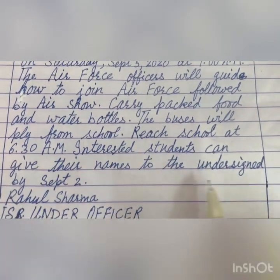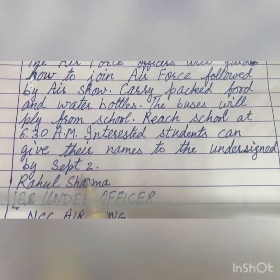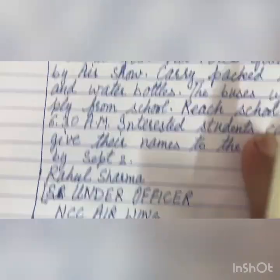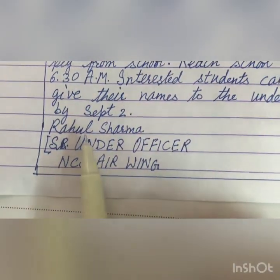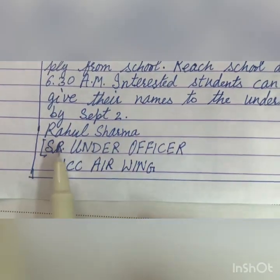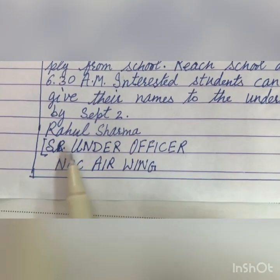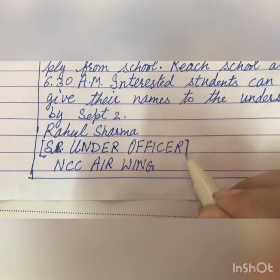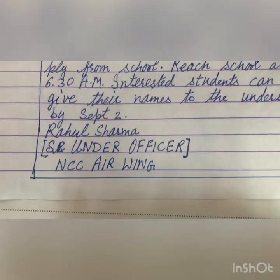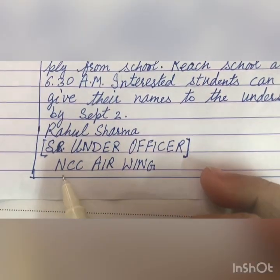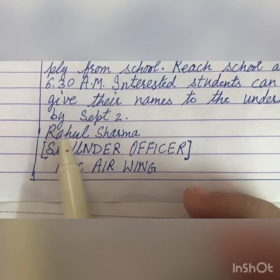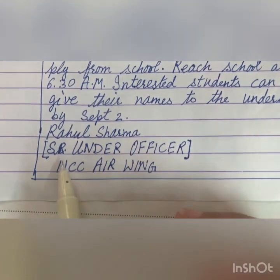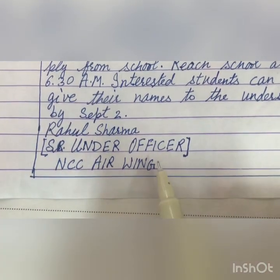Participation is not mandatory. Interested students can give their names to the undersigned by September 2. The notice is written by Rahul Sharma, Senior Under Officer — write this in brackets — NCC Air Wing. The name and designation of the person issuing the notice has to be written in block letters.